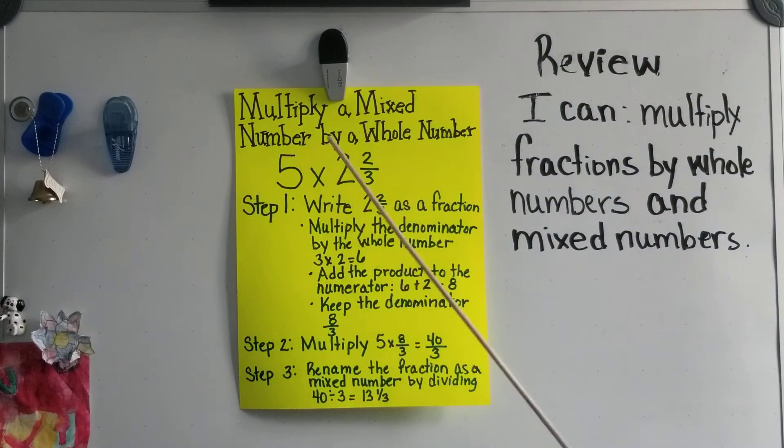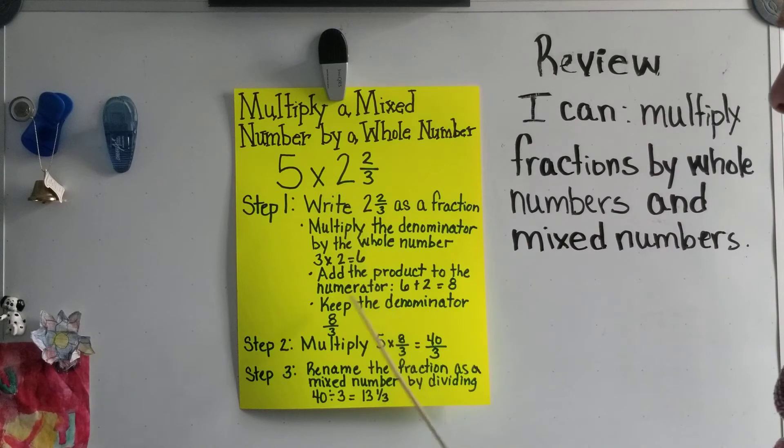Our first step is to write two and two-thirds as a fraction. Well, how do we write two and two-thirds as a fraction? Well, we multiply the denominator by the whole number.